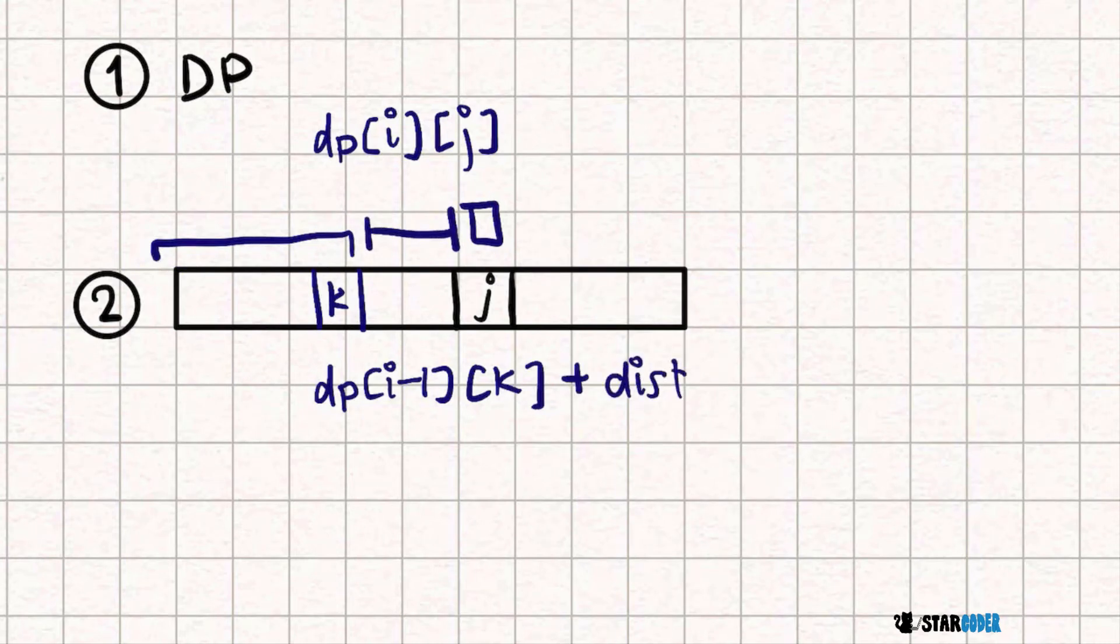We find this distance by keeping two prefix sums. Since we're looping K from J to zero, we keep track of the total distance traveled by all cows as we move backwards.